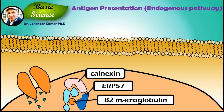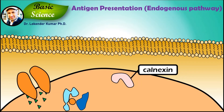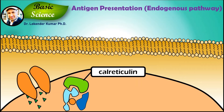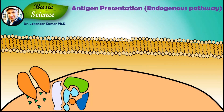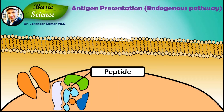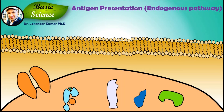When beta-2 microglobulin binds with the complex, calnexin is released and two new chaperone proteins named calreticulin and tapasin are added. Tapasin brings the TAP transporter complex near to the MHC protein complex and helps in the attachment of the peptide with MHC class I molecule. After binding with the peptide, the complex is dissociated and calreticulin, ERP57, and tapasin are released into the lumen of the rough endoplasmic reticulum.